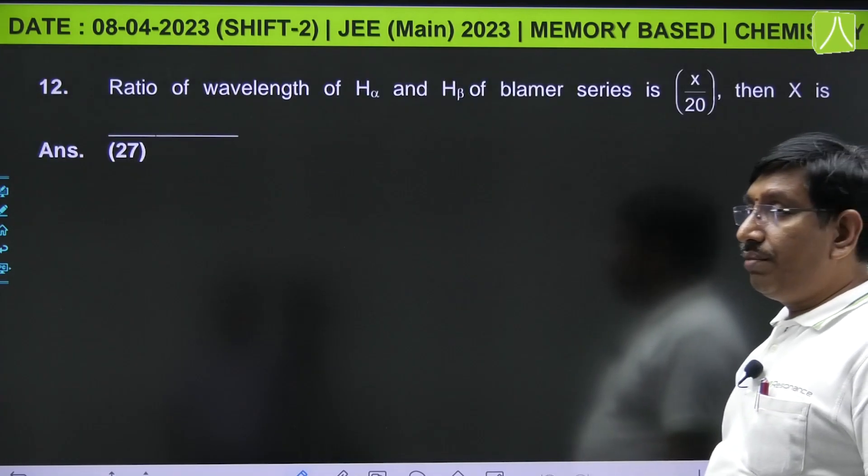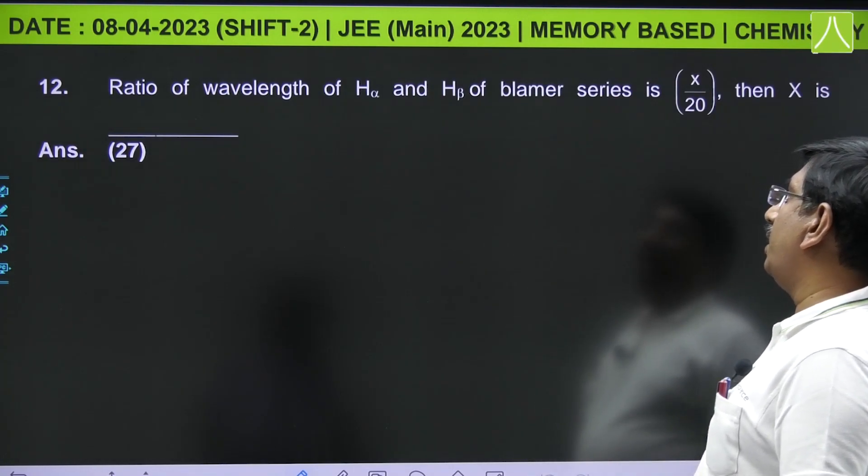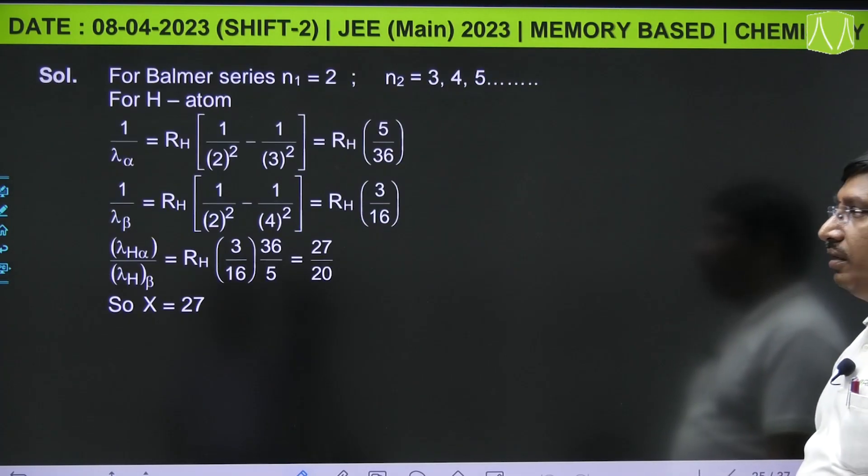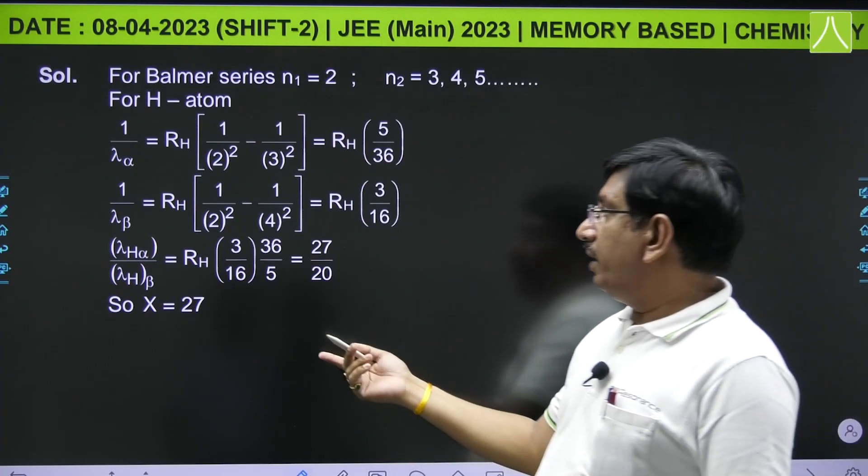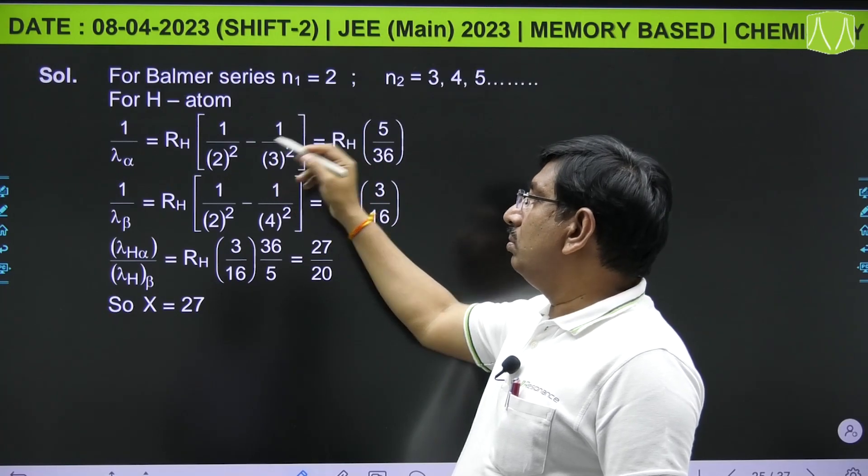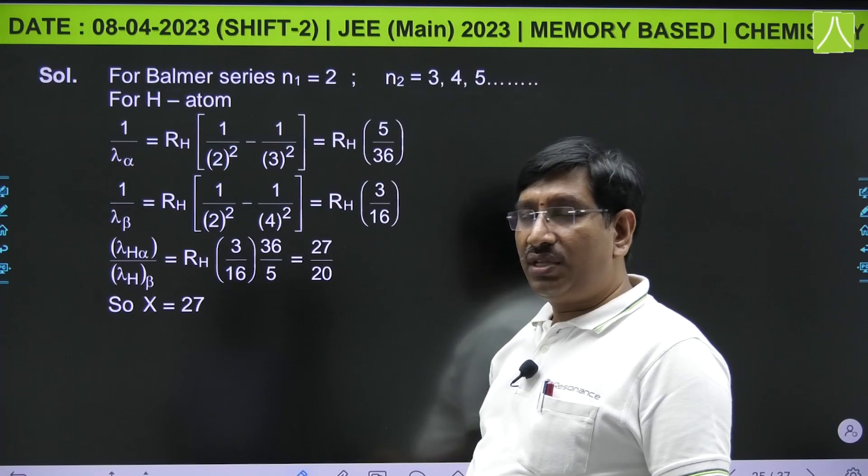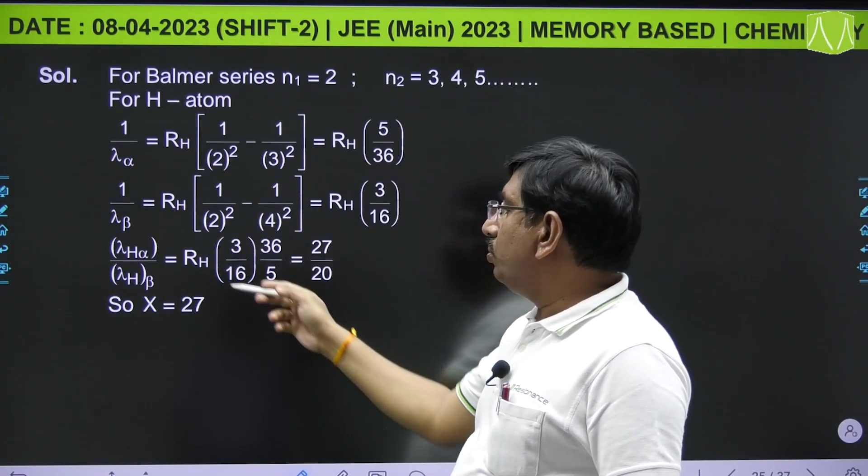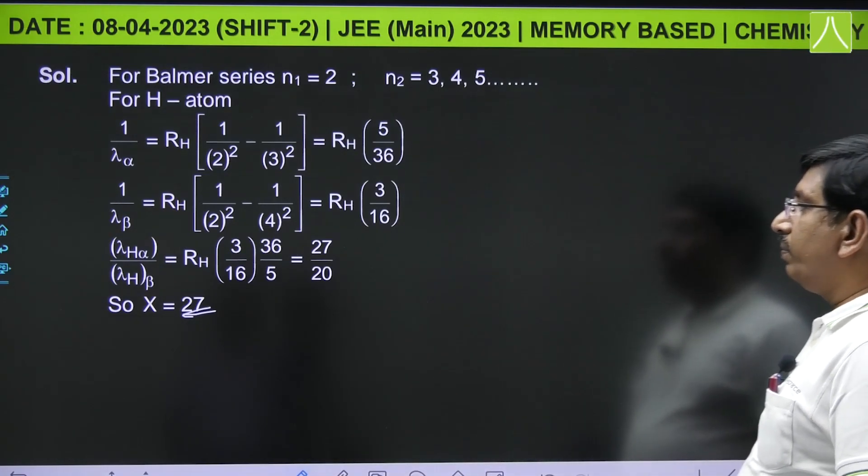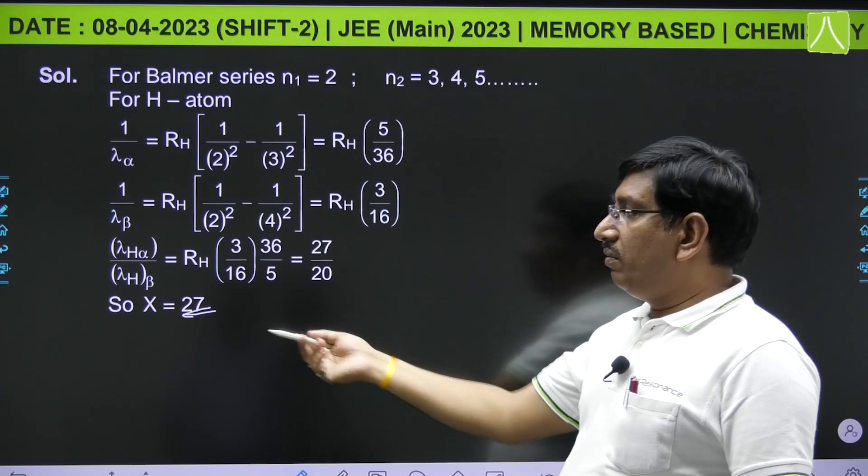Next from atomic structure: the ratio of wavelength of Hα line to Hβ line of Balmer series is x/20, then x is? Hα line means first line, Hβ line means second line. In Balmer series, when electron jumps from 3 to 2 you get first line, and when electron jumps from 4 to 2 you get second line. So this ratio will be equal to 27/20, and here it's given in form of x/20, so x value is 27.